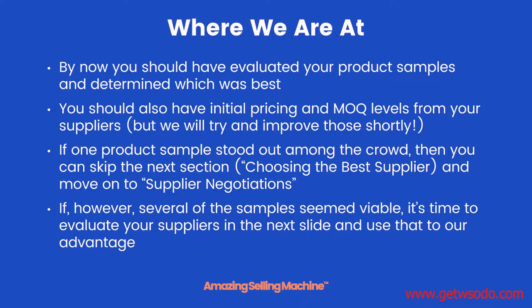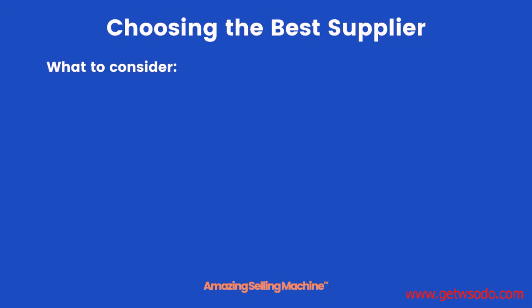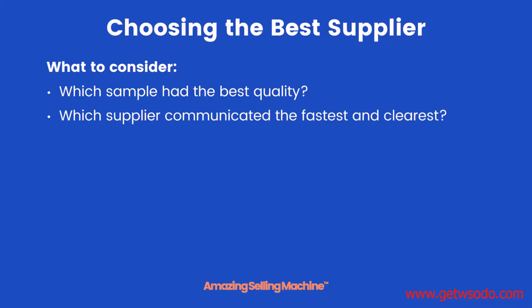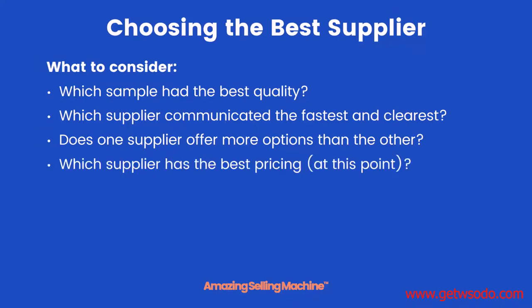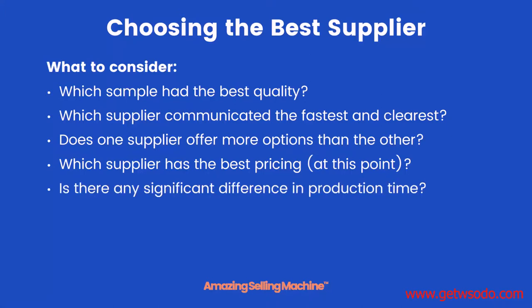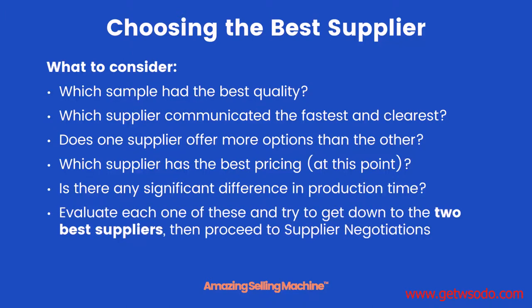However, if several of your samples seem viable, it's time to evaluate your suppliers and use that to our advantage during negotiations. Here are some things to consider: which sample had the best quality, which supplier communicated the fastest and clearest with you, did one supplier offer more options than the others, which supplier had the best pricing, and were there any significant differences in production time — perhaps one supplier could manufacture your products in 25 days but another was backed up and might take 40.